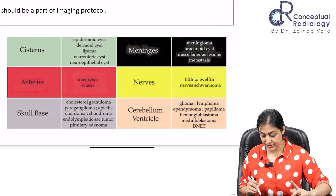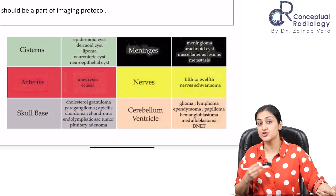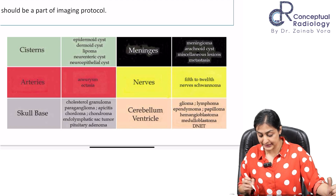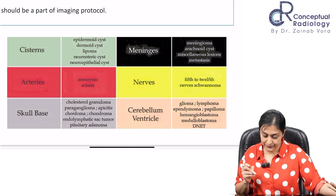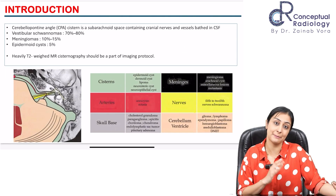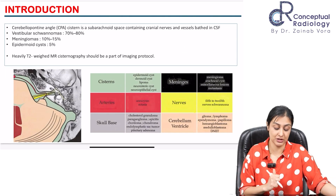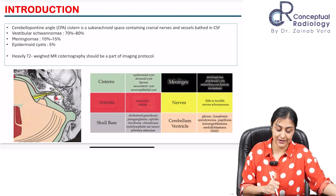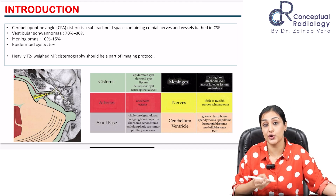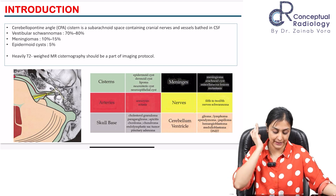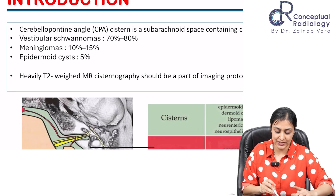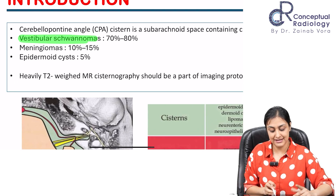Any cerebellar lesion or fourth ventricle lesion can impinge into the cistern — glioma, lymphoma, papilloma, hemangioblastoma, medulloblastoma. Essentially everything from our primary brain tumor class can also appear here. This area is at the crossroads of many pathologies, which is why there is so much overlap.